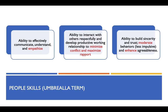First, people skills. People skills is an umbrella term — a phrase or word that includes different kinds of things, using one word or phrase to help people understand better. People skills encompass three kinds of abilities. The first ability is the ability to effectively communicate, understand, and empathize.